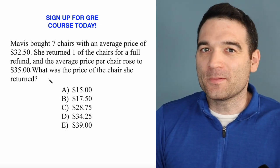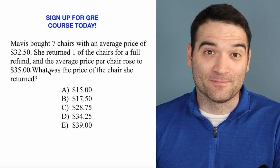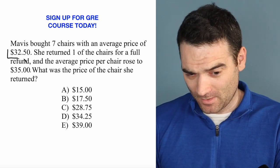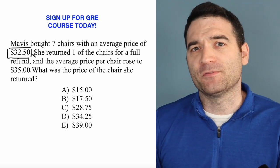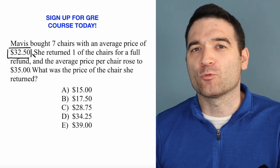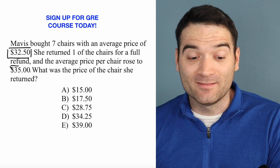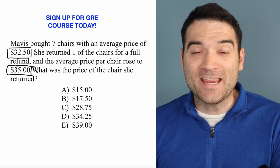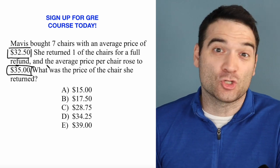Alright, so before we really dive into the math of this, we can actually make our life a little bit easier. Check this out. So we're told that we start with this average, $32.50. Then when I return one of the chairs, the average goes up. So what does that mean about the chair that I gave back? It means that it was a cheap chair.